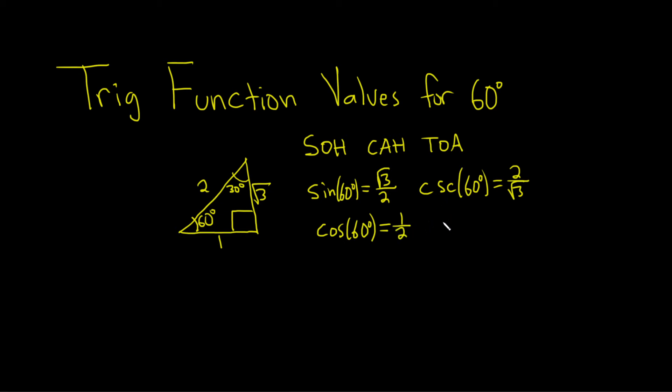The reciprocal of cosine is secant. It's the one that starts with the other letter. So secant of 60. And you just flip it. So you get 2 over 1, which is just 2.